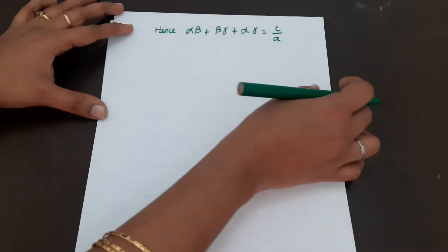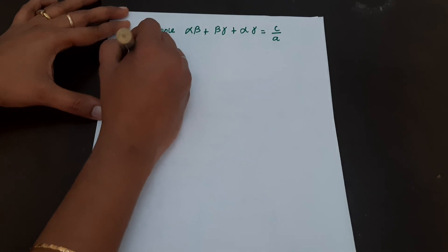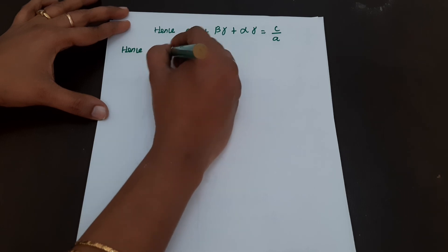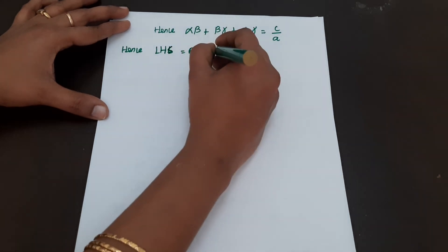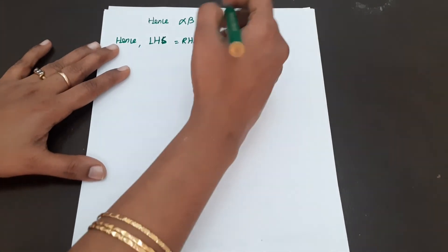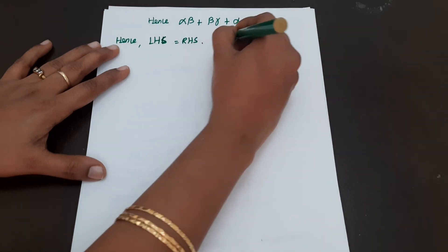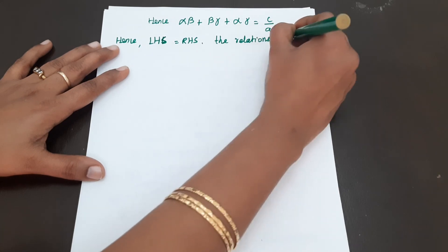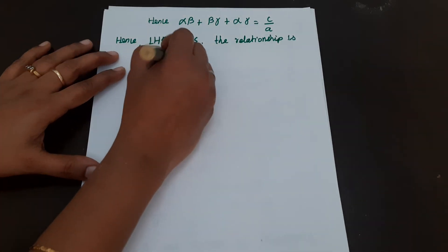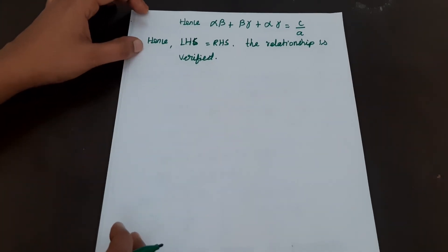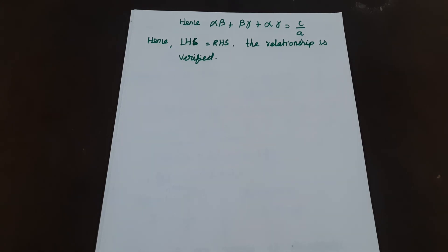Hence all relationships are verified. LHS is equal to RHS in all three cases. The relationship between zeros and coefficients of the cubic polynomial is verified. For the next question, watch the next video. Please subscribe, share, like and comment. Thank you.